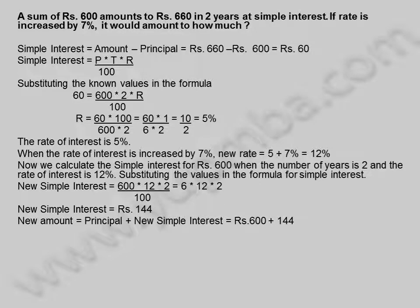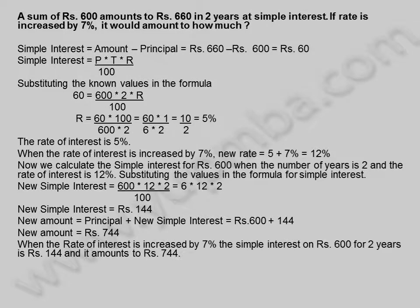New amount equals principal plus new simple interest, which is 600 plus 144 rupees. New amount equals 744 rupees. When the rate of interest is increased by 7%, the simple interest on 600 rupees for two years is 144 rupees and it amounts to 744 rupees.